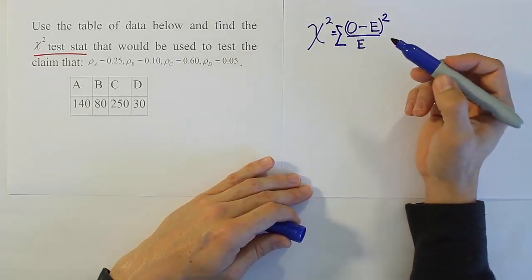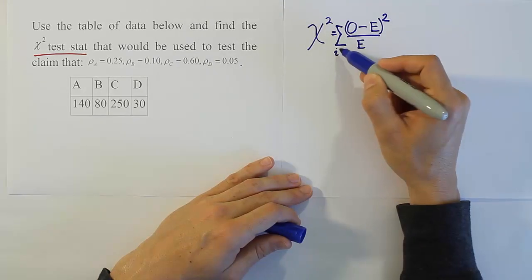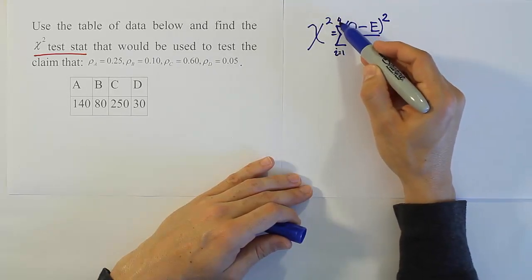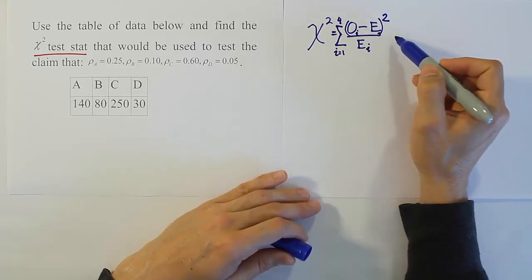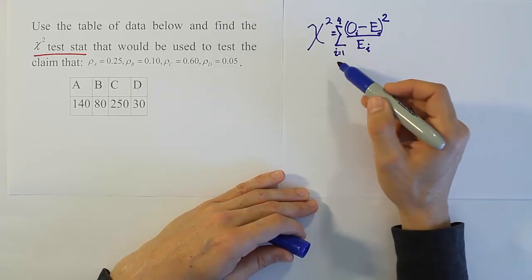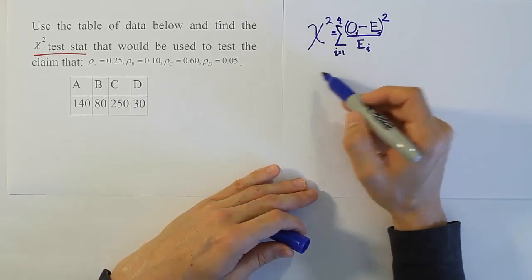In this case, we have four cells. So we'd actually have the summation going from the first cell to the fourth cell. And then there'd be little i subscripts here just to say the expectation and the observations for each cell. Alright, so we talked about this formula in the last video, so I'm not going to go over it in detail again here.